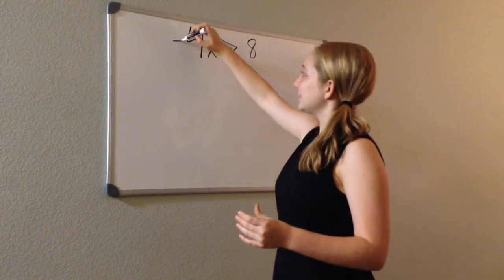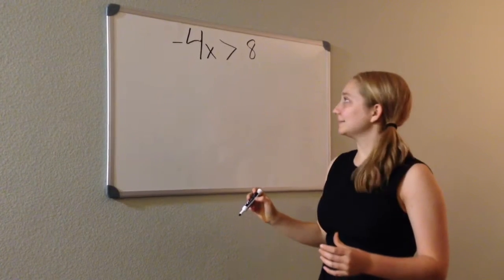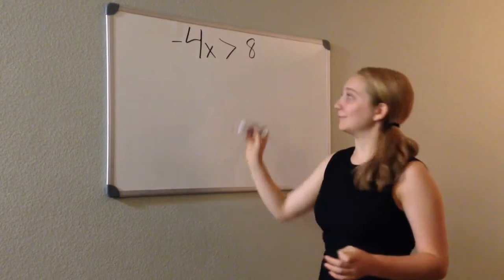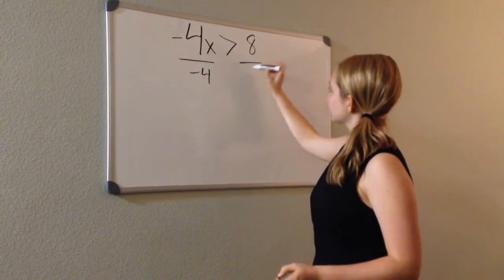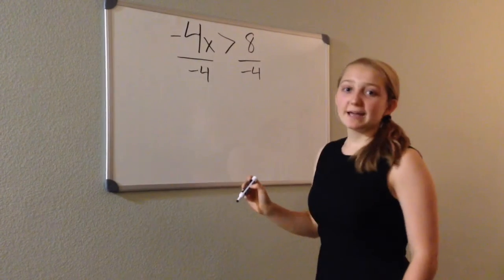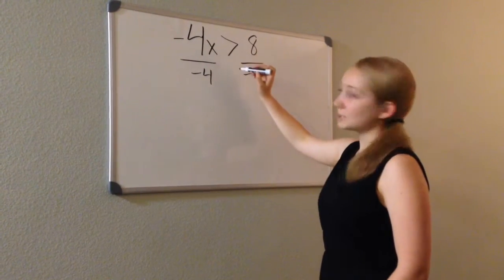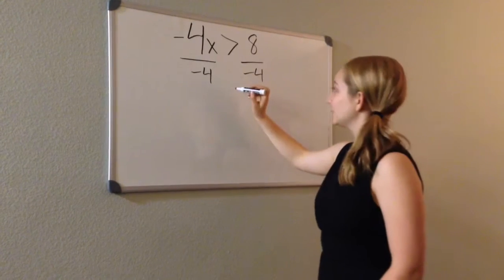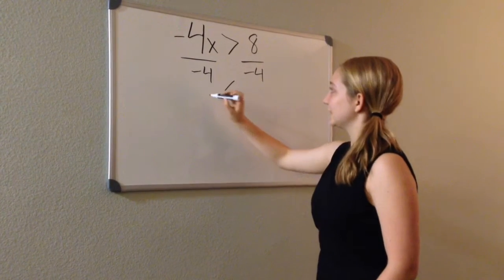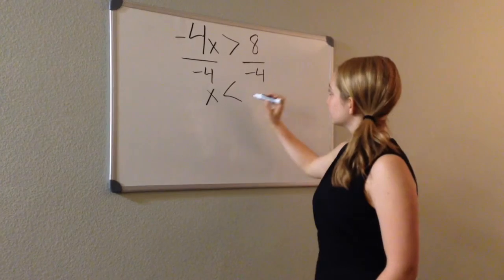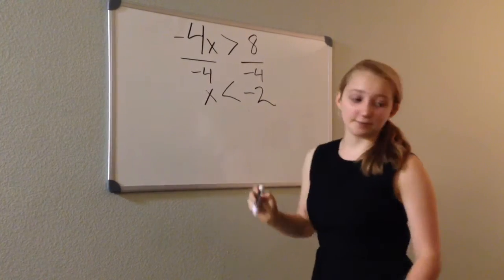What happens when it's a negative 4? You have to divide by negative 4. When dividing or multiplying by a negative number, you have to switch the sign in the middle. So the greater than sign would become a less than sign. So now X is less than negative 2.